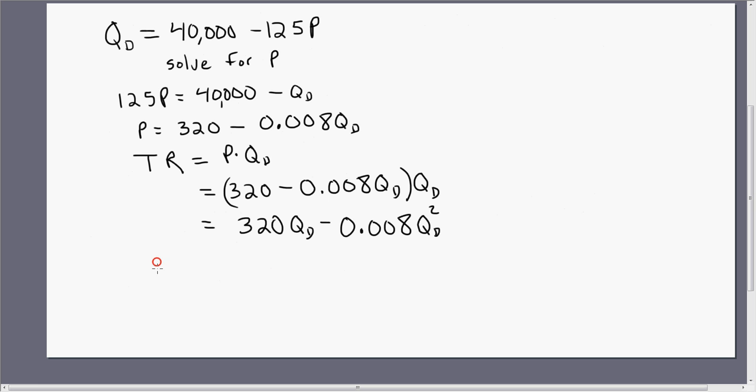Now let's get marginal revenue. The marginal revenue of the dominant firm is going to be given by this equation right here. So that's the marginal revenue of the dominant firm. Notice the similarity between marginal revenue and the price equation. Basically identical except for the fact that the slope here of the marginal revenue equation is twice that of the price equation.